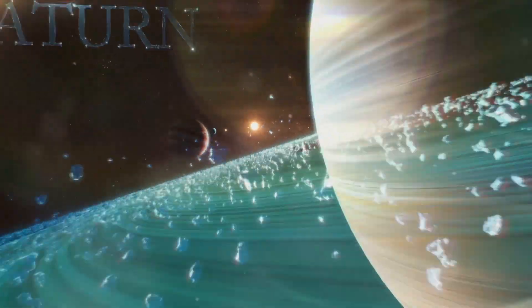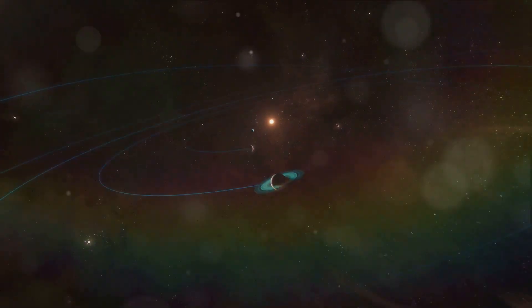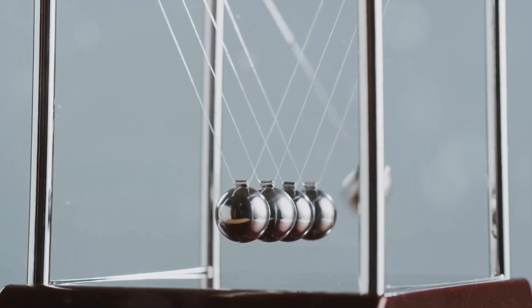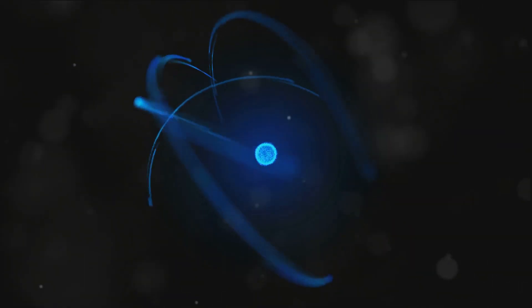This rapid spinning caused the cloud to flatten into a disk, which is the plane in which the planets formed. This is due to a principle in physics known as the conservation of angular momentum.